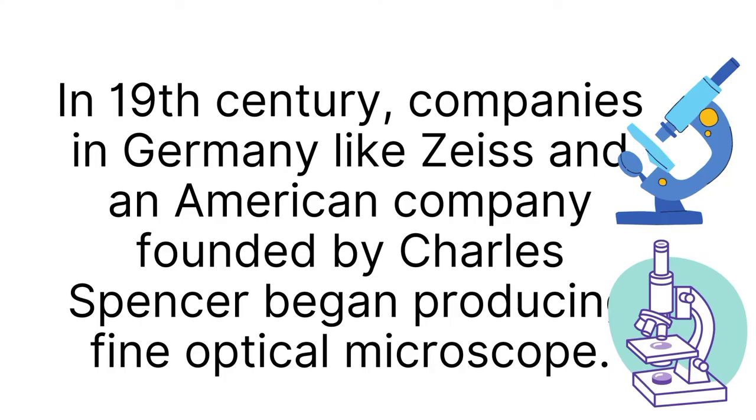Little was done to improve the microscope until the middle of the 19th century when great strides were made that quality instruments like today's microscope emerged. The prototype microscope was credited to Joseph Jackson Lister in 1830 which reduces spherical aberrations and chromatic effect. He showed several weak lenses used together at certain distances that may result in good magnifications without blurring. In the 19th century, companies in Germany like Zeiss and an American company founded by Charles Spencer began producing fine optical microscopes.